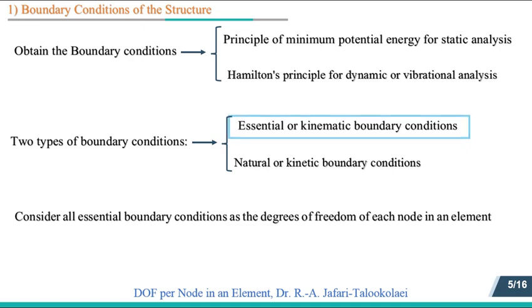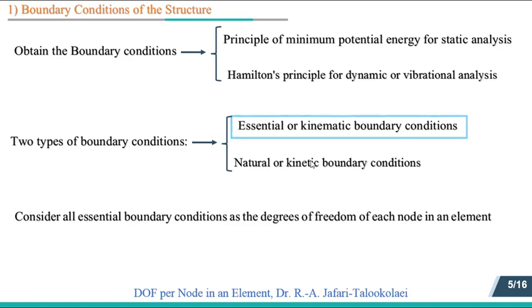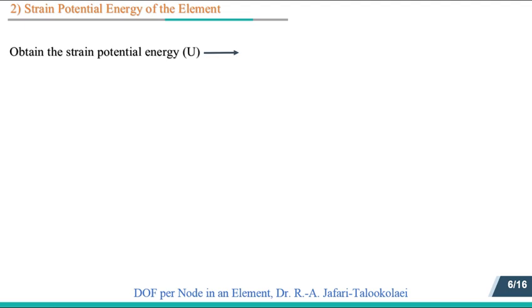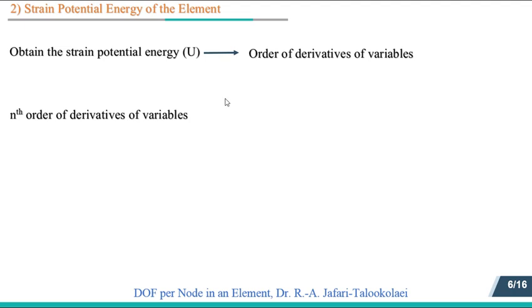In the second method — the strain potential energy method — we first obtain the strain potential energy for the element. Then, based on the order of derivatives of variables appearing in the integrand, we define the degrees of freedom for each node. If the nth order of derivatives of variables appear in the integrand of the potential energy, then up to one order less than those derivatives must be considered as the degrees of freedom for each node in a simple or higher order element.